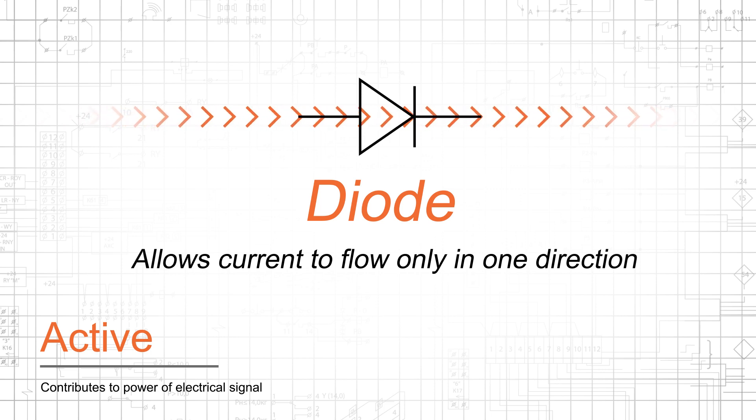If we say that an active component must allow an applied electrical signal to control the current flowing through another portion of the component, then we would classify diodes as passive.